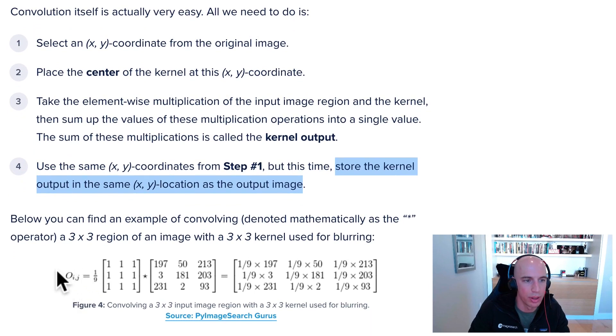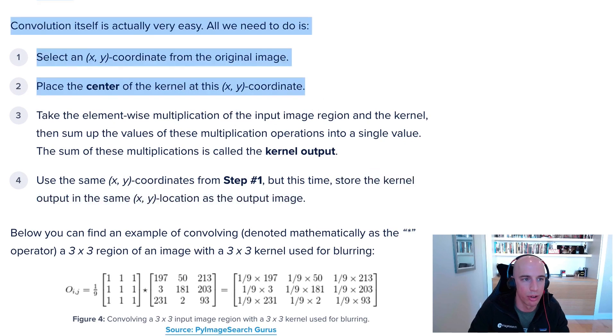Let's say here that we have this output region i sub j—these are the output x, y coordinates. We have this blurring kernel right here because we're doing some averaging. This region right here is the input ROI, the three by three input region of the image where our kernel stopped.